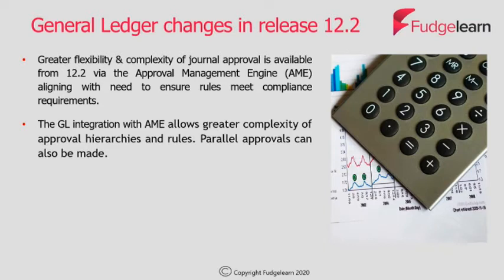Approval rules can be defined for different scenarios, for example combinations of ledger, entered amount, or approval level. In addition to this, journal attributes such as journal category, account, or even descriptive flex field information can also be used.